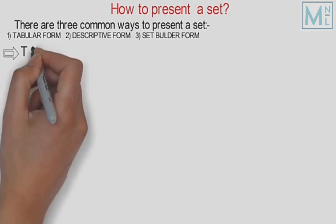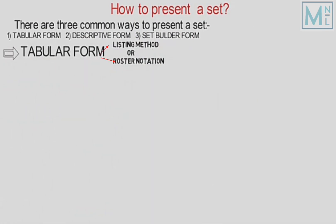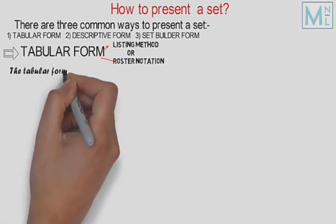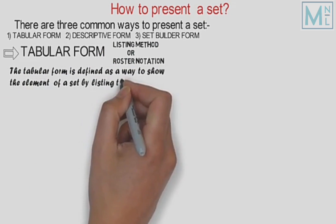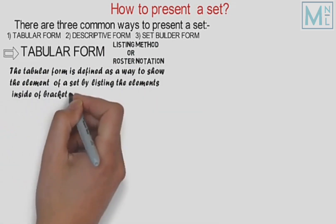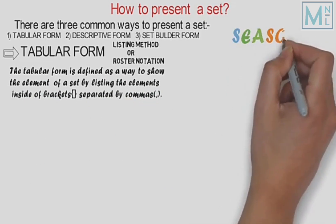Tabular form, listing method, ya phir roster notation bhi kehte hain. Tabular form ek aisa tarika hai jismein hum tamam elements ko likhte hain, matlab elements ki listing karte hain curly brackets ke andar, aur har element ko alehda ya alag-alag karte hain commas ki madad se.